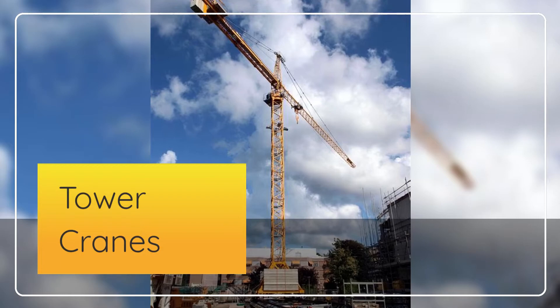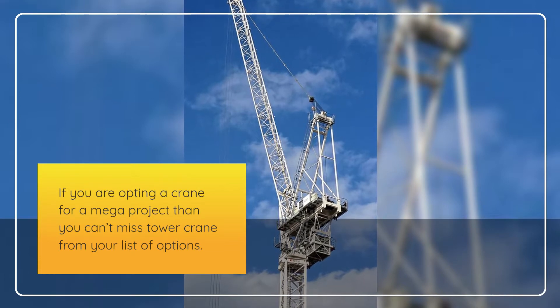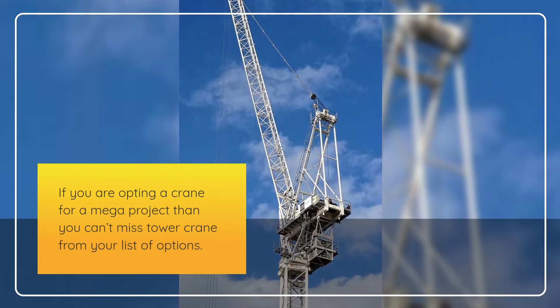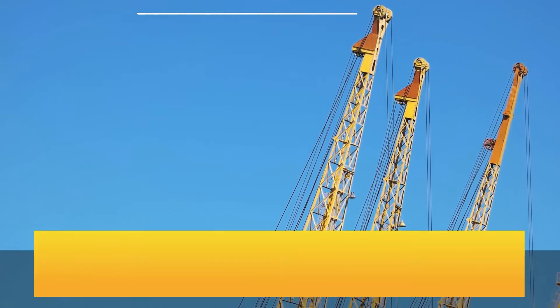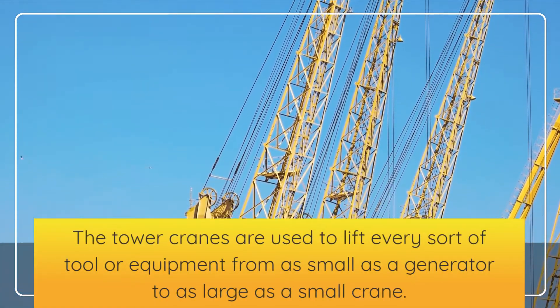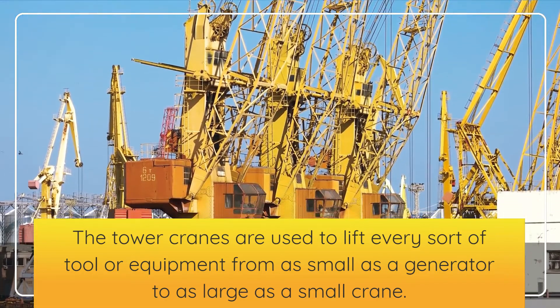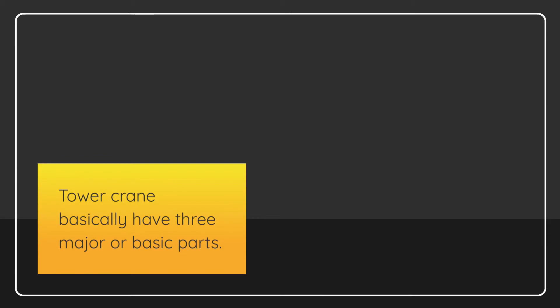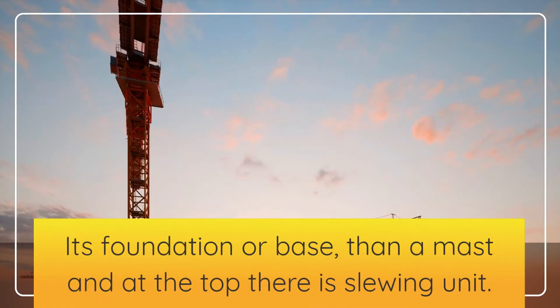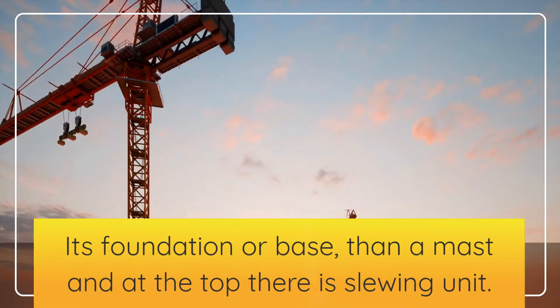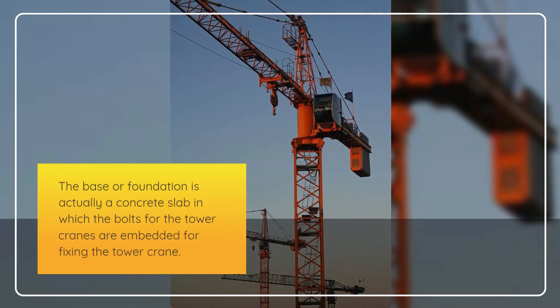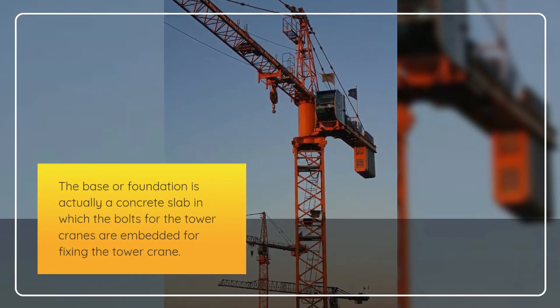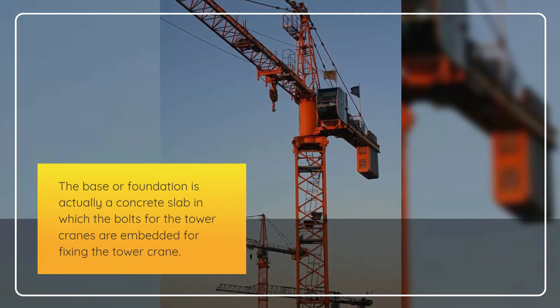The next is tower cranes. If you are opting for a crane for a mega project, you can't miss a tower crane from your list of options. Tower cranes are used to lift every sort of tool or equipment, from as small as a generator to as large as a small crane. A tower crane has three major basic parts: its foundation or base, then a mast, and at the top there is a slewing unit. The base or foundation is a concrete slab in which the bolts for the tower crane are embedded for fixing.